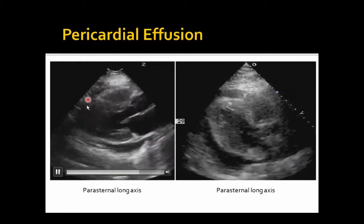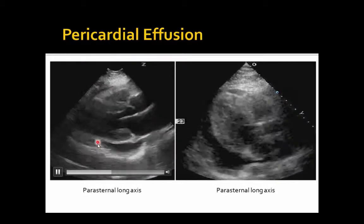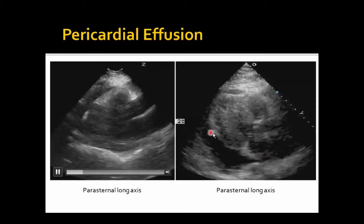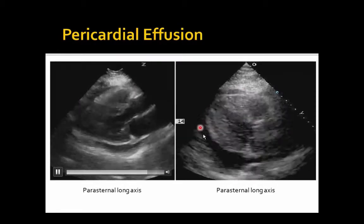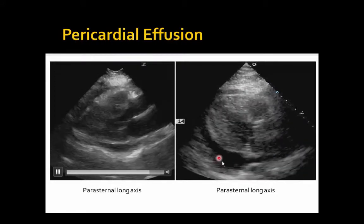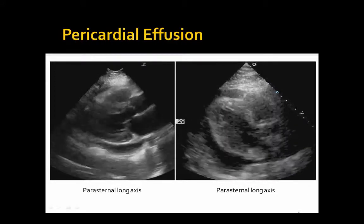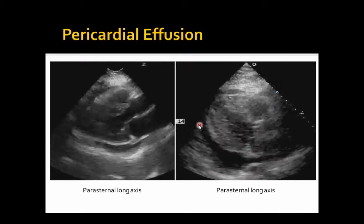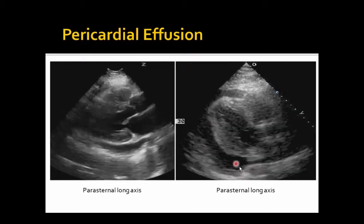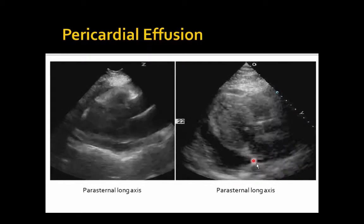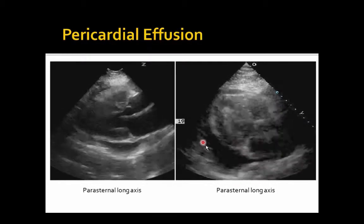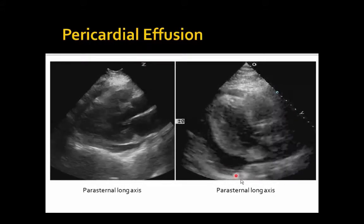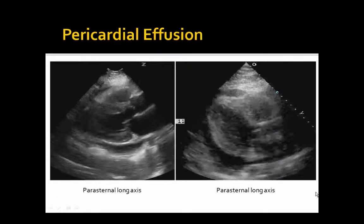You can see this black stuff surrounding the heart — here it's circumferential. That's pericardial effusion. Here we see another example of black fluid surrounding the heart. One thing to note: right here is the descending aorta. Pericardial effusions should come up and go towards the front of the descending aorta, while pleural effusions will go down behind it — that can help you differentiate the two.